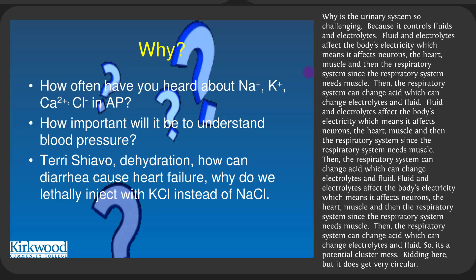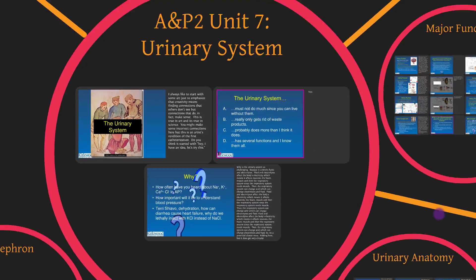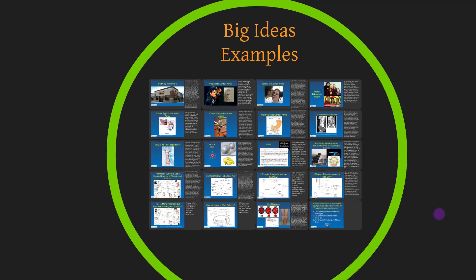Fluid and electrolytes affect neurons, the heart, muscle, and the respiratory system. Things get circular — especially when one thing goes wrong, it can cause a lot of other things to go wrong in a positive feedback way. We'll cover things like sodium, potassium, calcium, and chloride, as well as blood pressure, and go through examples like Terry Schiavo.